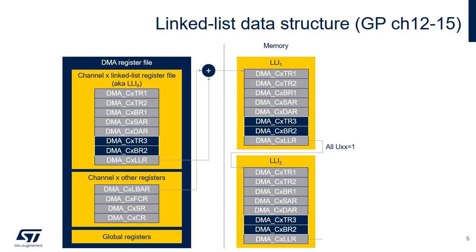During the link, if all UXX bits are set to 1, the eight registers of the channel X linked list register file are updated from the LLI present in memory.